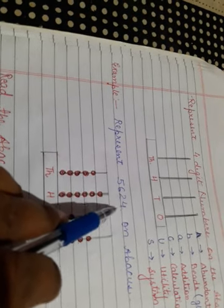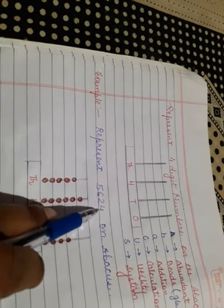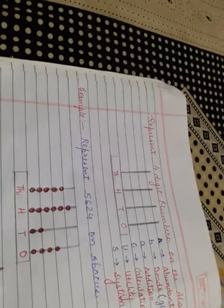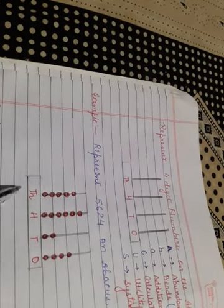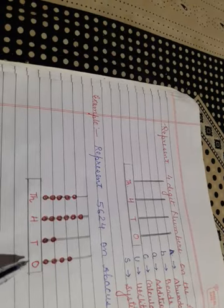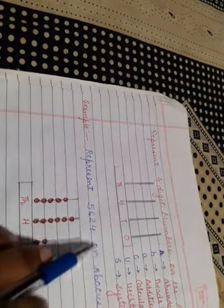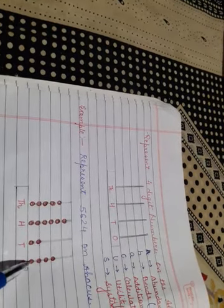Now, to understand the four-digit number on the abacus, let's take the number 5624. You have to write from the right side. For a four-digit number, you make four rods and name them from the right side: Ones, Tens, Hundreds, and Thousands.